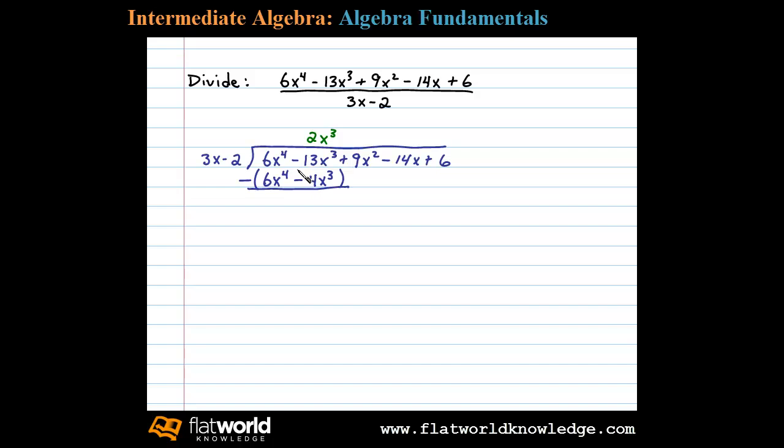So negative 13x cubed plus 4x cubed leaves us with negative 9x to the third, and then bring down the rest of the terms.